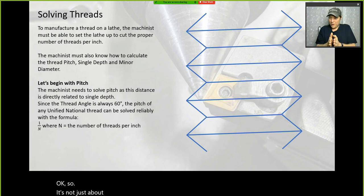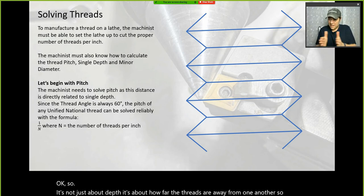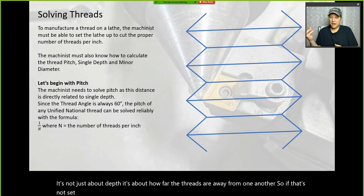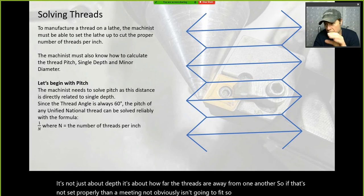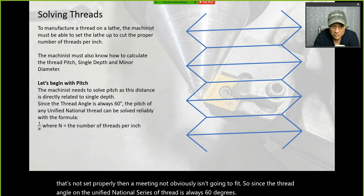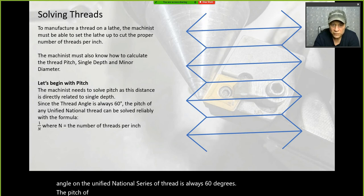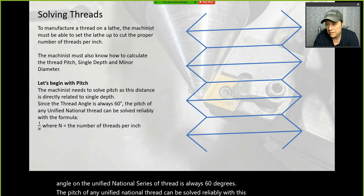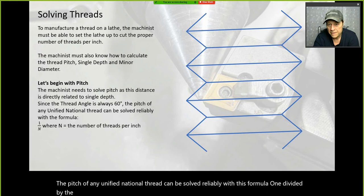It's not just about depth — it's about how far the threads are from one another. If that's not set properly, a mating nut obviously isn't going to fit. Since the thread angle on the Unified National series of threads is always 60 degrees, the pitch of any Unified National thread can be solved reliably with this formula.